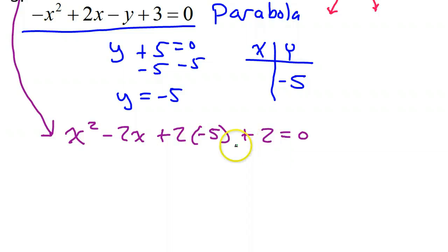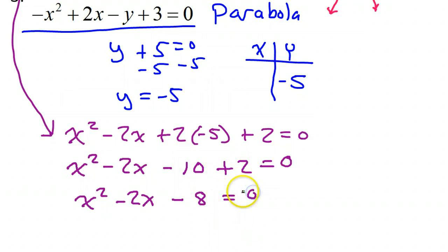No more y value. Only x value. So, I have x squared minus 2x. 2 times negative 5 is negative 10 plus 2 equals 0. So, that's x squared minus 2x minus 8. Just combining negative 10 plus 2 equals 0.